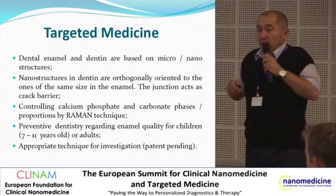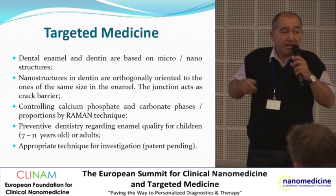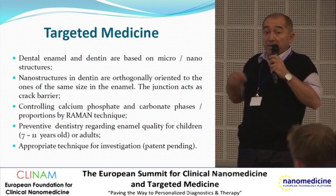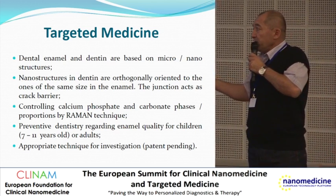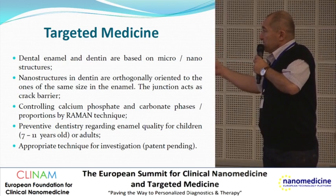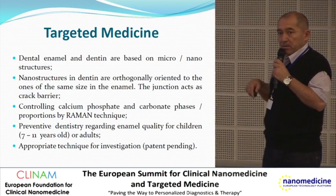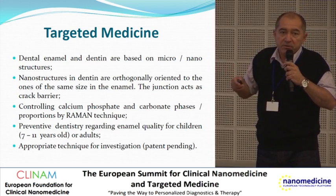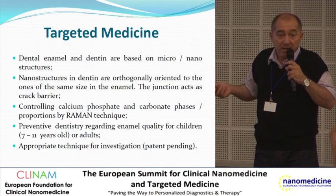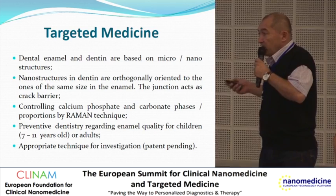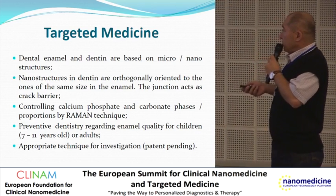We can use this method to improve quality because it's better to do it when they are children instead of having traumatic interventions when you are 30 or 40. Maybe it's a problem of money because dental practitioners are looking for implants, but they can transfer resources from implants to these prevention methods. It can be more efficient and we save the patient because it's not so traumatic. When we have traumatic cases, we make implants.